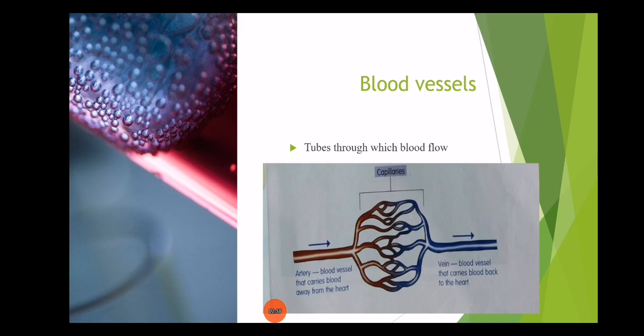This is the definition of blood vessel. Blood vessels are basically the tubes through which blood flows. In the diagram, the red color shows the artery, the blue color shows the vein, and in the center we have a cluster that is called the capillary. These all are the blood vessels, and we will discuss them in our next section.